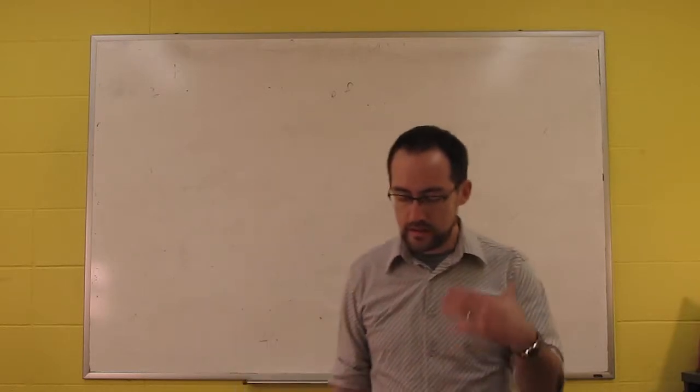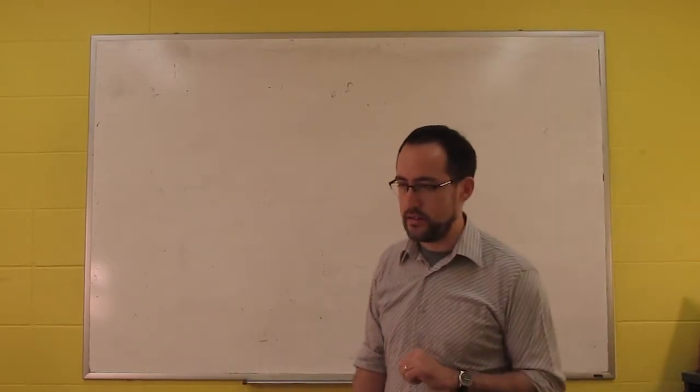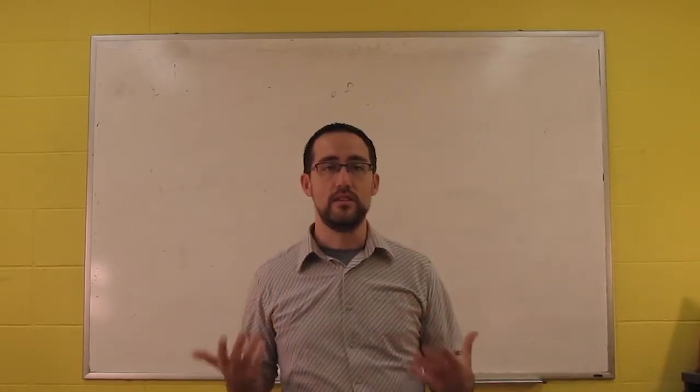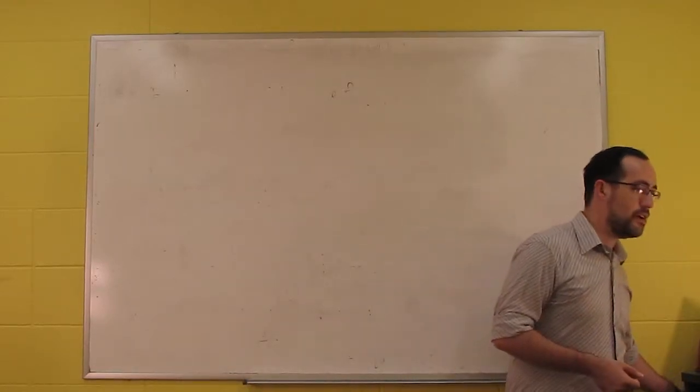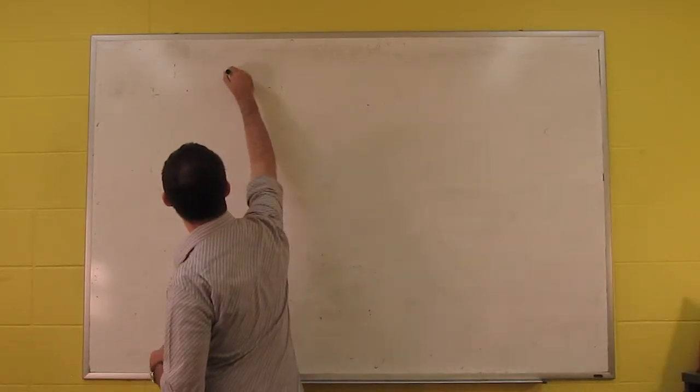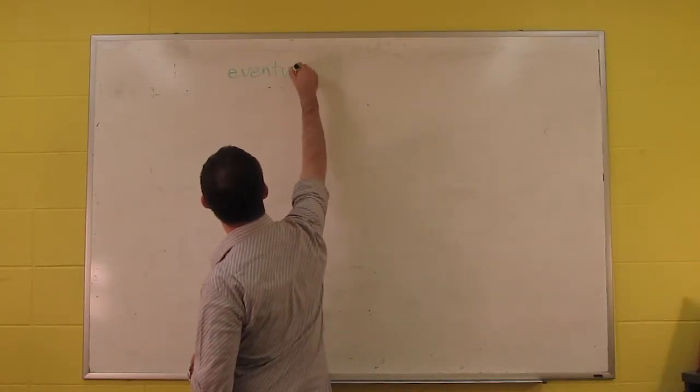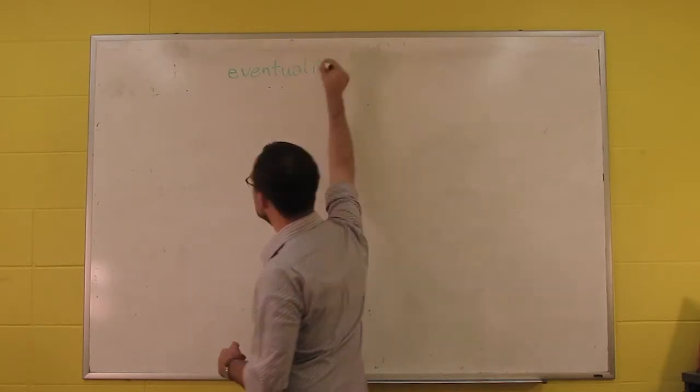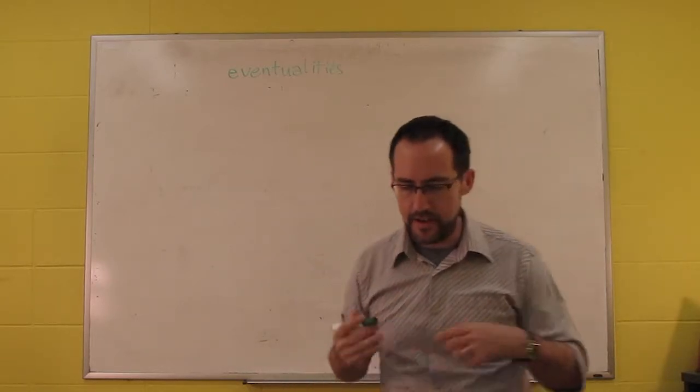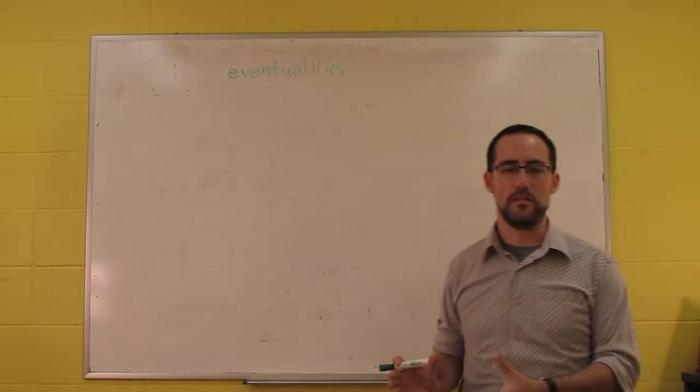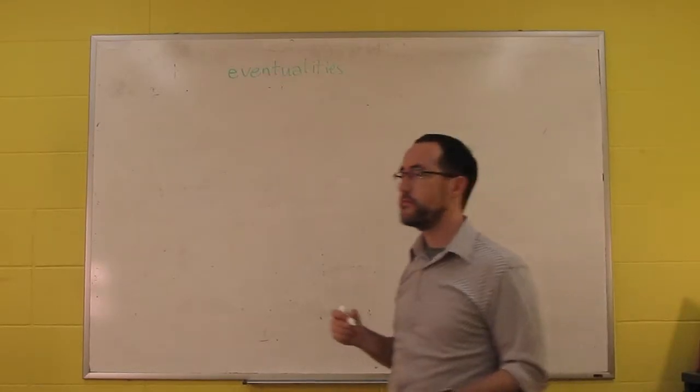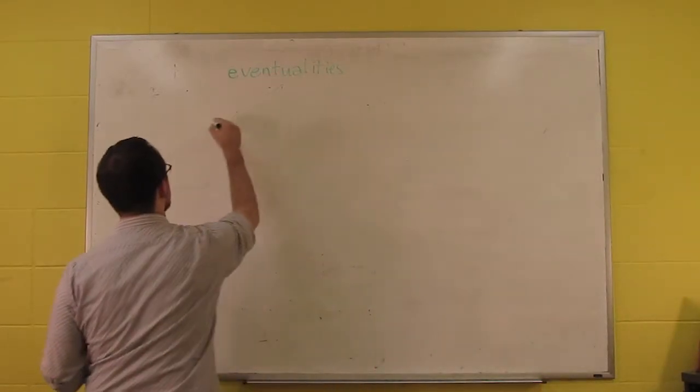And so, based on the work of Vendler and Dowty and so forth, we've come up with a classification of different events or event types. Now, these different predicates are properties of events. Sometimes they're called properties of eventualities. It's a term from Emmon Bach that englobes all the things we're going to talk about here. And the reason why they didn't use events at the top is because the first division is into states and events.